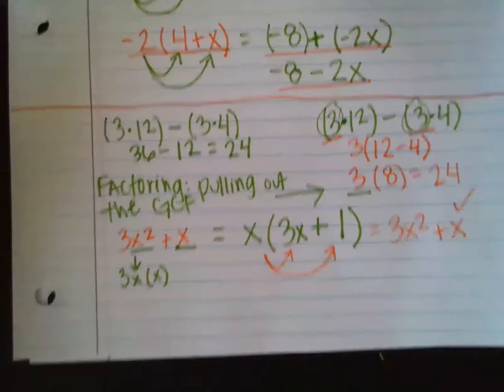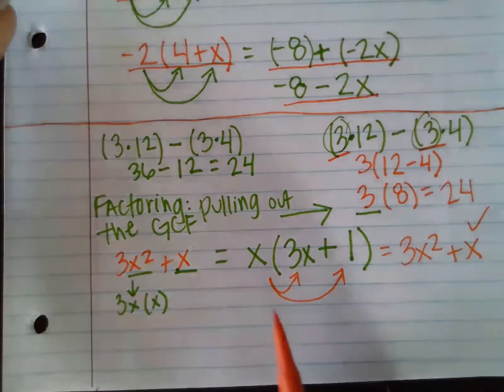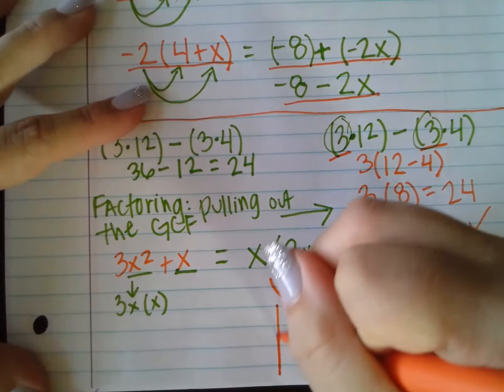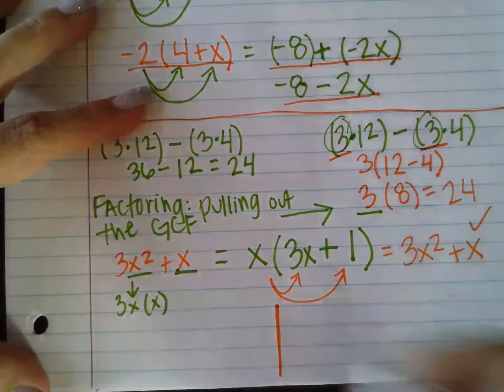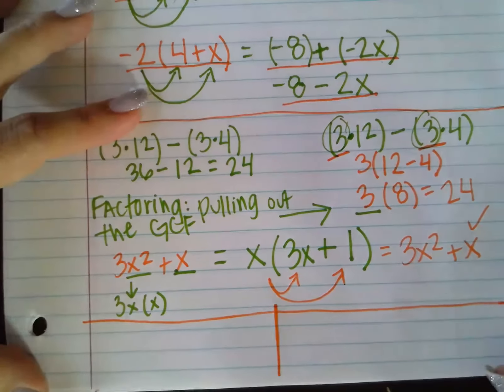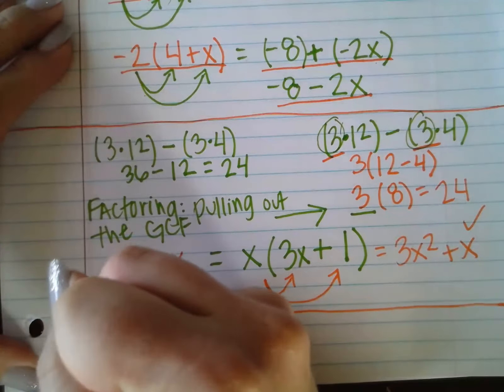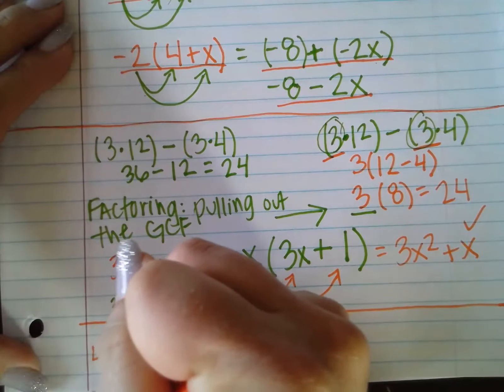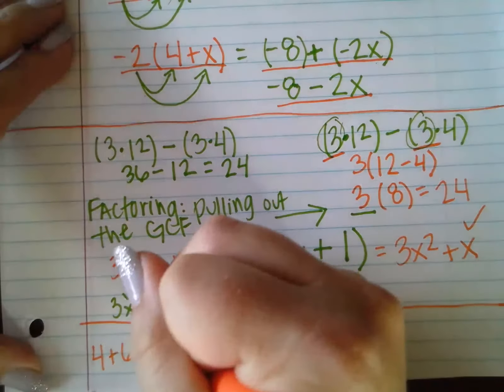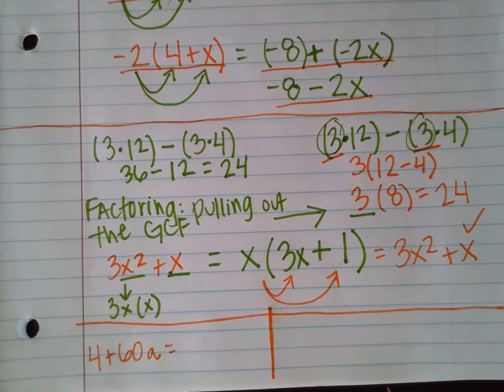Let's say I have—I'm going to do two more examples. So I'm going to write them kind of small, and I'm going to try to split them up between the bottom two sections here. Let's say I have the expression 4 plus 60 times A. So what I'm going to do is look between the two terms, 4 and 60 times A, and determine what factors they share.